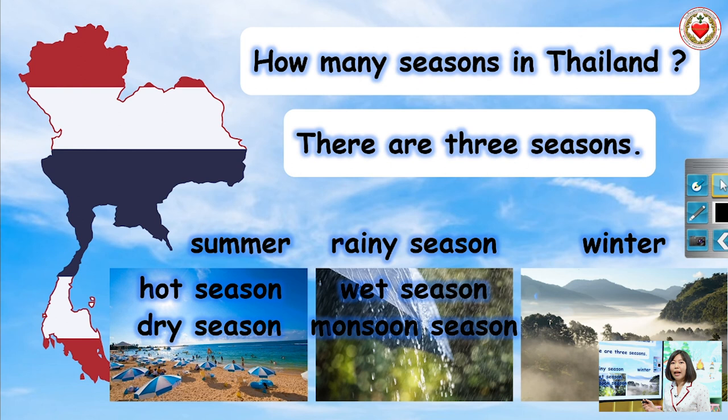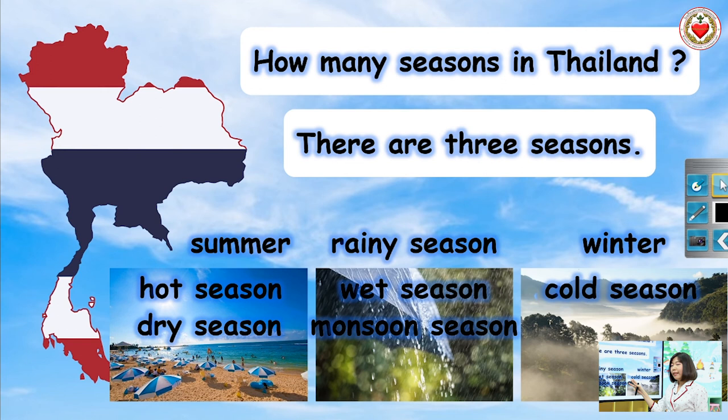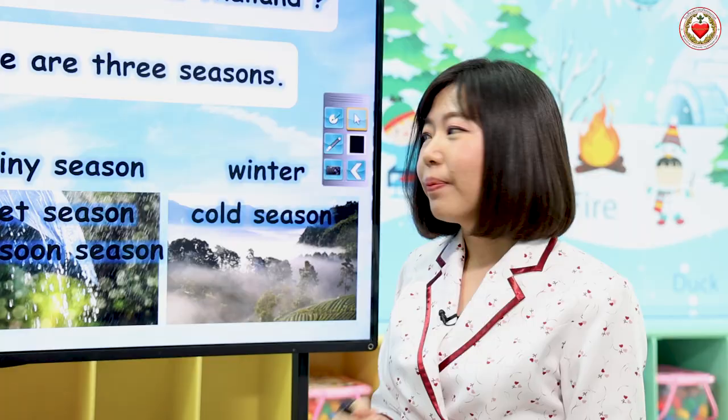คำที่อยากนำเสนอสำหรับฤดูหนาวในประเทศไทยนะคะ คำว่า Winter จะเป็นหนาวแบบ Full Option แบบว่าอาจจะมี Snow ตกลงมานะคะ แต่ประเทศไทยเราไม่ได้หนาวขนาด Winter ค่ะ เราสามารถเรียกฤดูหนาวในประเทศไทยได้ว่า The cold season — C-O-L-D. The cold season.